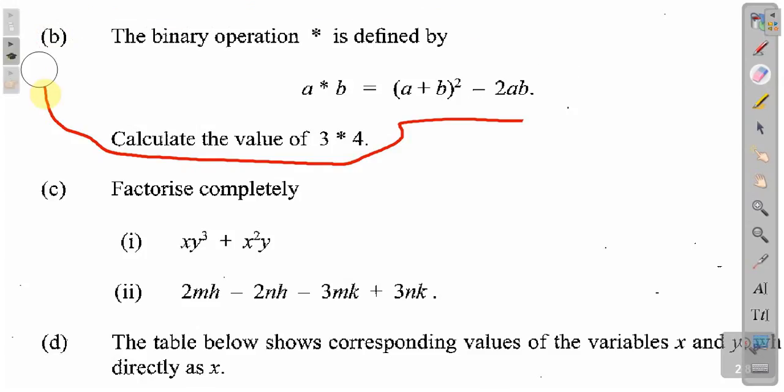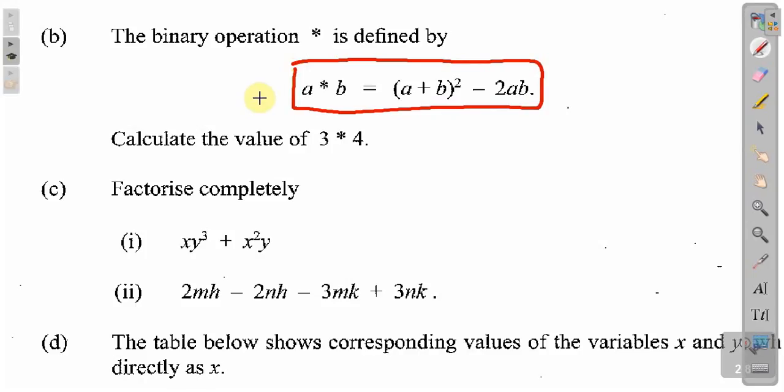Let us get into it. It says the binary operation asterisk is defined by a asterisk b is equal to open bracket a plus b close bracket square minus 2ab. And it asks us to calculate the value of 3 asterisk 4. Well, first of all, when it comes to binary operation, this equation here represents a well-defined rule.